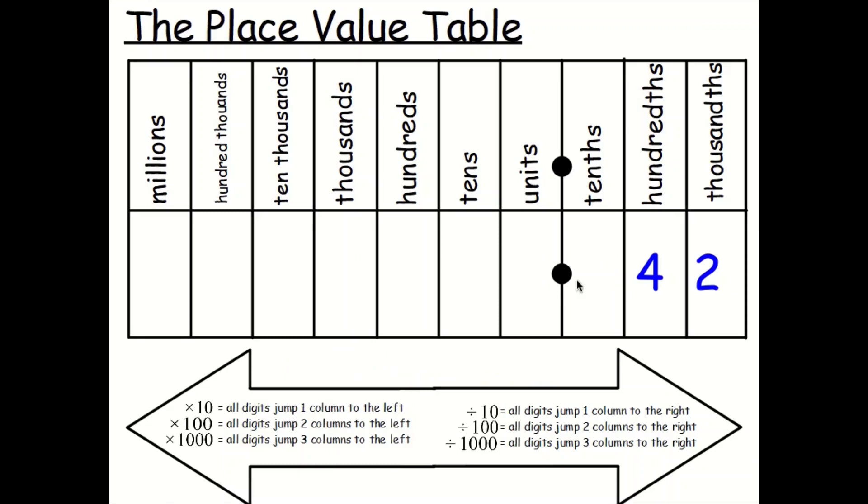What about the number 42? Let's do 42 divided by 1,000. 42 divided by 1,000. Three jumps to the right. 1, 2, 3. And then fill in those gaps. And that is 0.042.